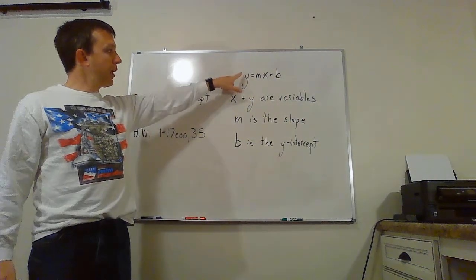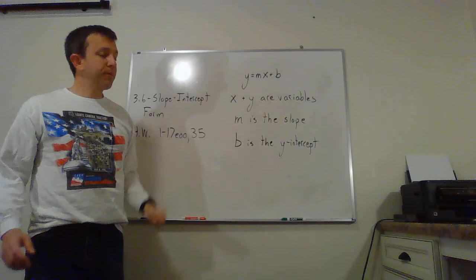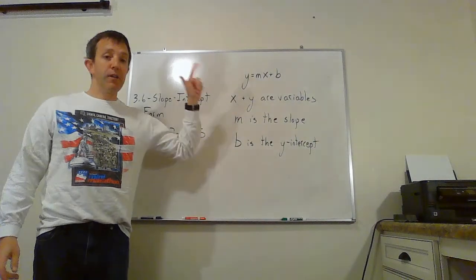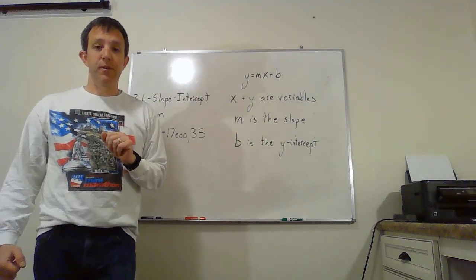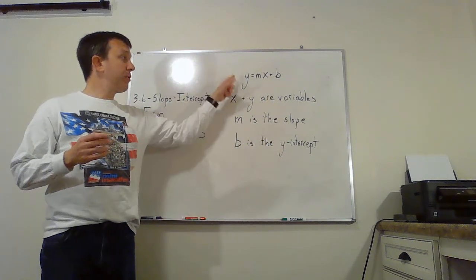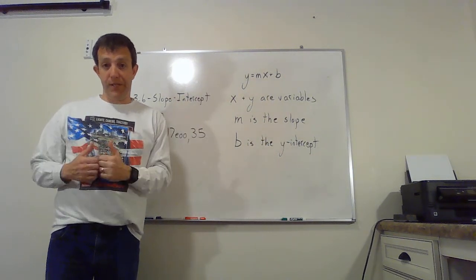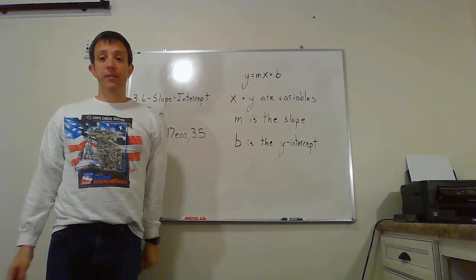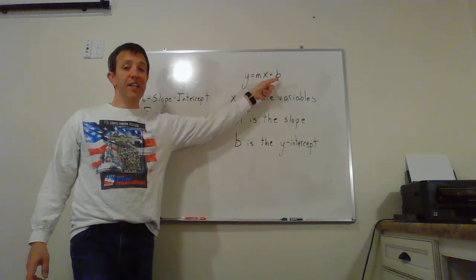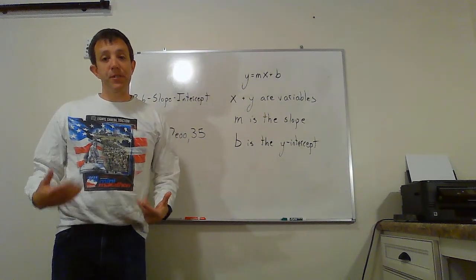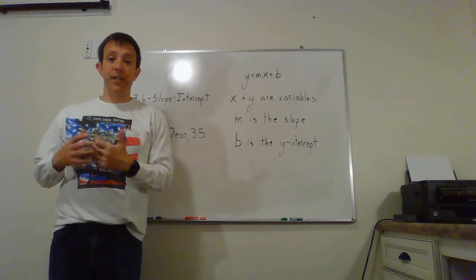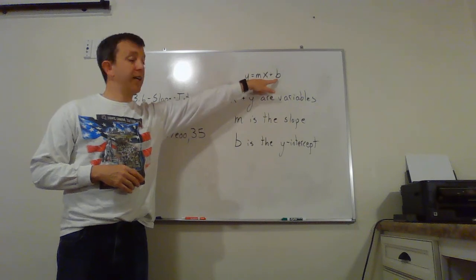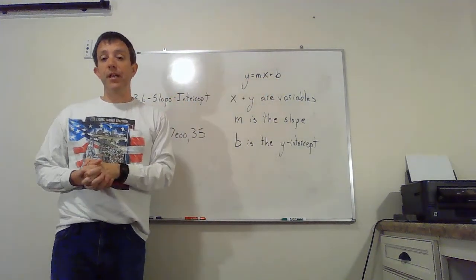The slope-intercept form is y equals mx plus b. I have the outline of what all that is here on this board and then we'll do some examples. First of all, we need to know that x and y are the variables. x and y are the variables, they are going to stay as x and y in our equation. When we write equations, they have x and y in them. m is the slope and b is our y-intercept.